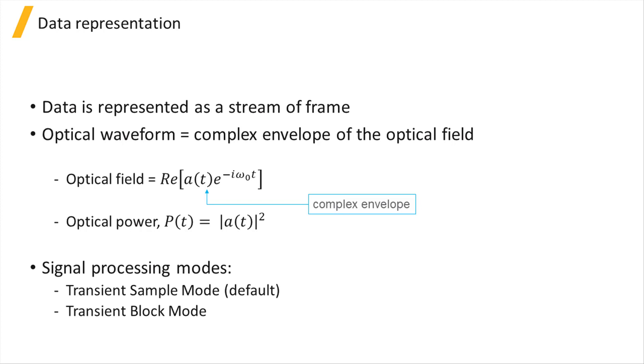Here, the impedance is taken to be one. Two different signal processing approaches are available for time domain simulations: transient sample mode and transient block mode. The default option is transient sample mode.